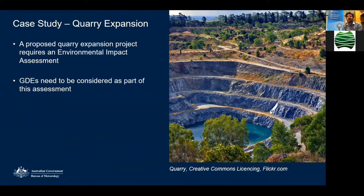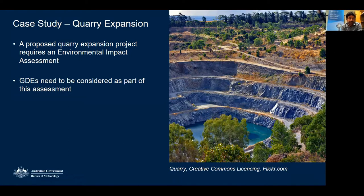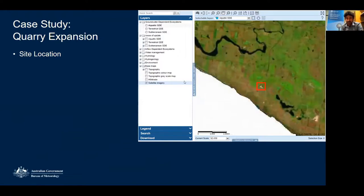Now I'll jump into the case study. The best way to show the Atlas tools and features is through a demonstration. The scenario — completely made up — is that a quarry is being expanded and an environmental impact assessment is needed to consider what GDEs are in the area and how they can be managed. The first step is to find your site area — I've put a red box around it. This is the GDE Atlas interface, with a toolbar at the top, layers to the left, and satellite imagery shown over the top. Different base layers are also available, such as land use, surface geology, and elevation.